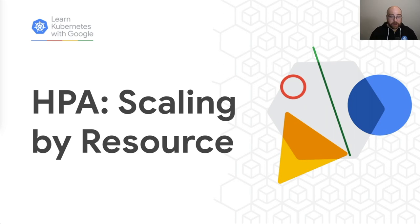Hello and welcome to the Learn Kubernetes with Google video series. I'm Bob Killen, a Kubernetes contributor and program manager here at Google. In this short video, we'll go over one of the available scaling metric types that can be used by the horizontal pod autoscaler: the resource type. This assumes you know what the horizontal pod autoscaler is and have some knowledge of pod requests and limits. If you're unsure, go check out the introduction video on this channel.